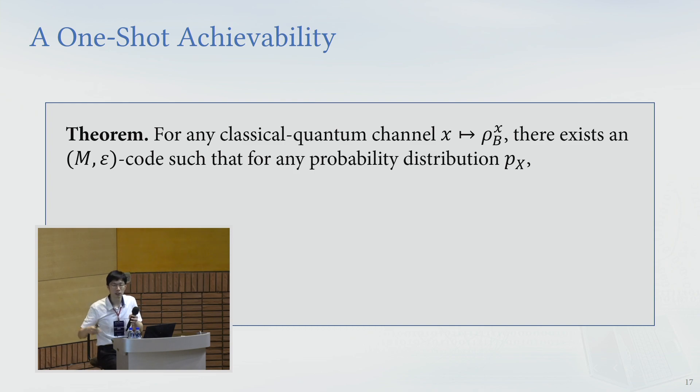Such that for any probability distribution Px, meaning that you can use any input distribution for encoder, then this bound on epsilon will be upper bounded by this trace rho x wedge b, where rho xb is the joint probability between the channel input and output. This Px is the input distribution used as the encoder, and this rho bx is the state at channel output.